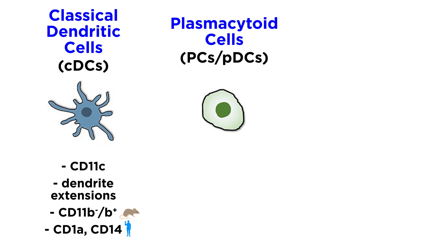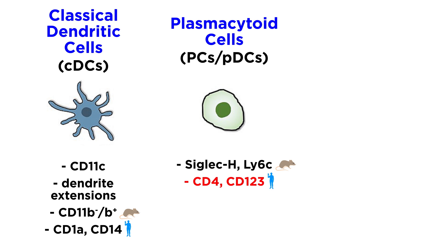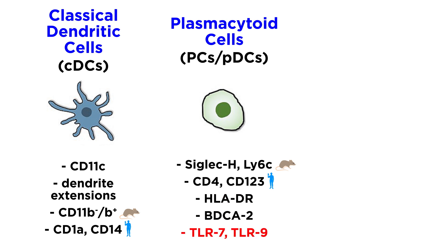Murine PDCs, or those found in mice and related rodents, express low amounts of CD11C and express other markers such as Siglec H and LY6C. Human PDCs express CD4, CD123, HLA-DR, and blood-derived cell antigen 2 (BDCA2), as well as toll-like receptors TLR7 and TLR9, but do not express the CDC marker CD11C.